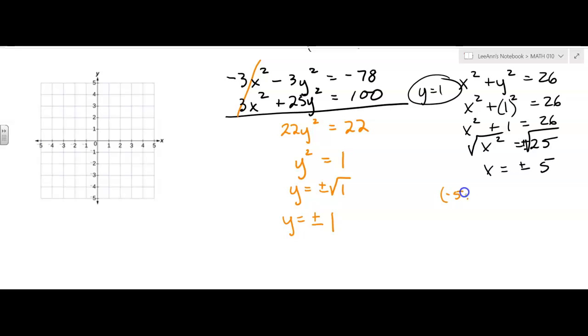Negative 5, comma 1, that's a solution. And positive 5, comma 1 is a solution. That's just if I put in the 1.